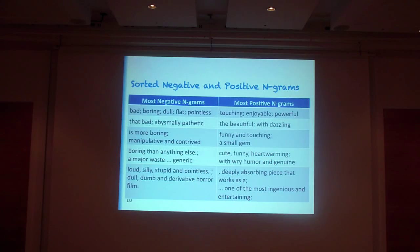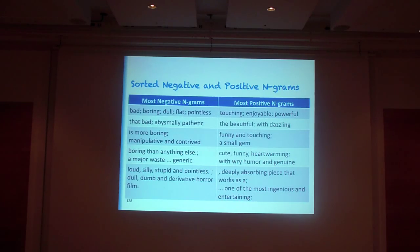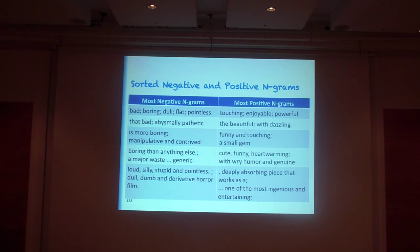In contrast, touching, enjoyable, and powerful are very positive words. I like the bigram 'abysmally pathetic' — that was one of the most negative bigrams the model identified, and a movie really has to be terrible to deserve that. For trigrams, concatenating positive words like 'funny and touching,' and bigrams like 'cute, funny, heartwarming,' are also very positive. Neatly, the model can abstract beyond obvious unigram statistics and assigns a very high probability of being positive to a phrase like 'the deeply absorbing piece that works as something.' The single words weren't that positive alone, but together they form a really positive sentiment.